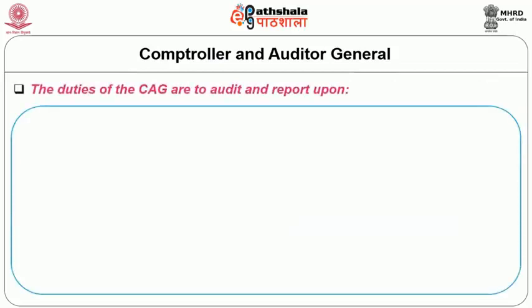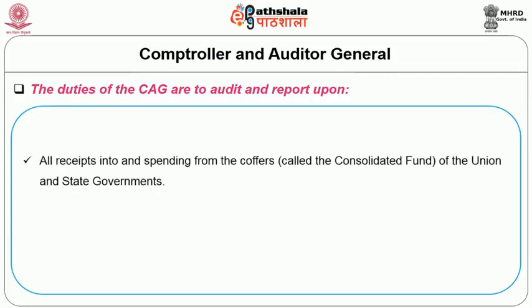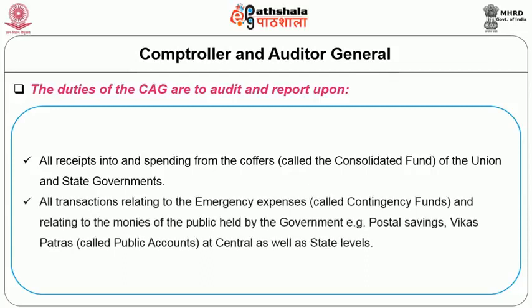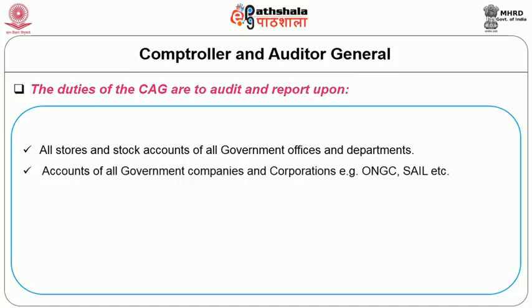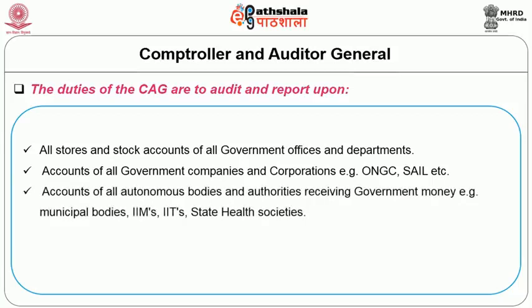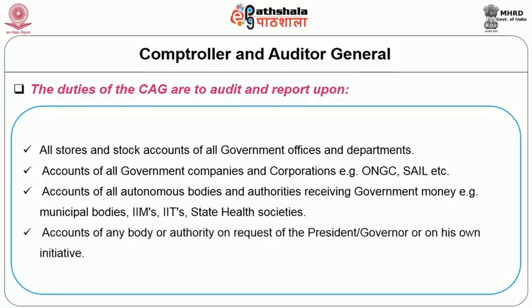The duties of the CAG are to audit and report upon all receipts into and spending from the Consolidated Fund of the Union and state governments; all transactions relating to contingency funds and monies of the public held by the government, such as postal savings and vikas patras at central as well as state levels; all stores and stock accounts of all government offices and departments; accounts of all government companies and corporations, for example ONGC; accounts of all autonomous bodies and authorities receiving government money, for example municipal bodies, IITs and IIMs; and accounts of any body or authority on request of the President or Governor or on his own initiative.